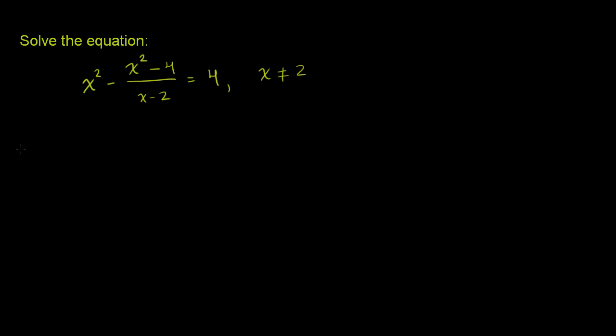If we were to rewrite it, this is equivalent to x squared minus, instead of writing x squared minus 4, we know that's a difference of squares. That is (x plus 2) times (x minus 2), all of that over (x minus 2), and that is equal to 4. This whole time we're assuming that x won't equal 2. Because x does not equal 2, (x minus 2) divided by (x minus 2) is going to be defined and it will be 1. So those two will cancel out.